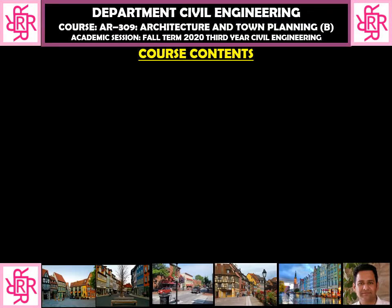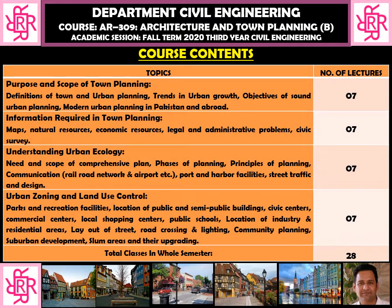First of all, it's important that we should have an understanding about the course contents. There are 28 topics. The first topic begins with understanding the purpose and scope of town planning, in which we will understand the definitions of town planning, urban planning, and urban design. We will look at the trends of urban growth — how cities grow over time — and the objectives of sound urban planning.